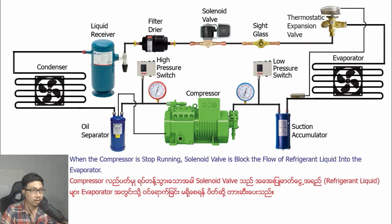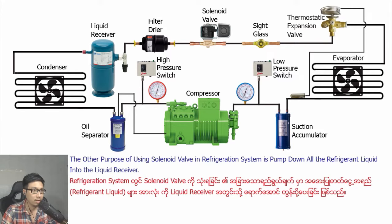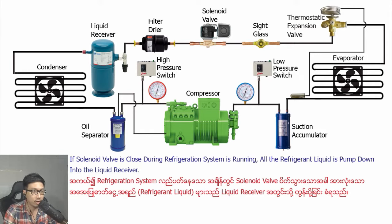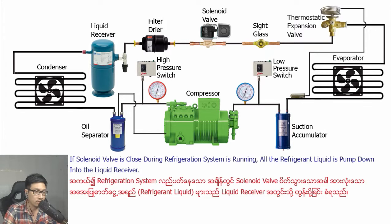When the compressor is stopped running, the solenoid valve stops the flow of refrigerant liquid into the evaporator. Another purpose of using the solenoid valve in the refrigeration system is to pump down all the refrigerant liquid into the liquid receiver. If the solenoid valve is closed while the refrigeration system is running, all the refrigerant liquid is pumped down into the liquid receiver.